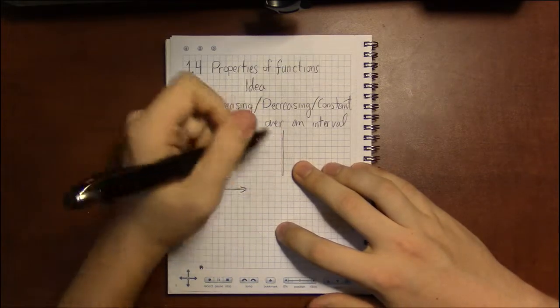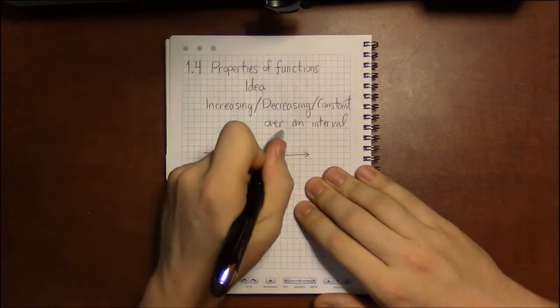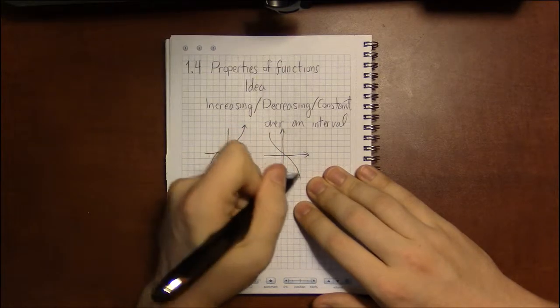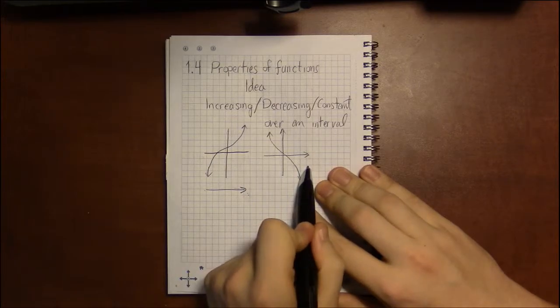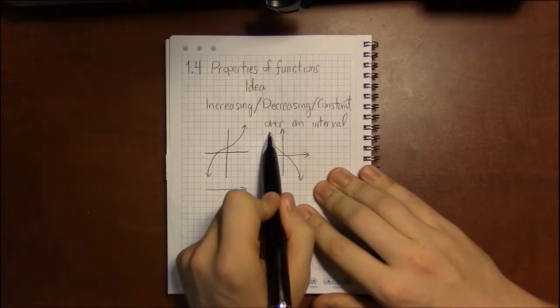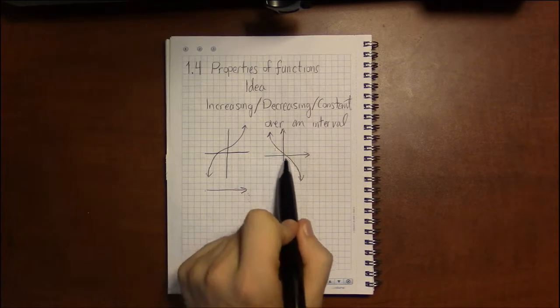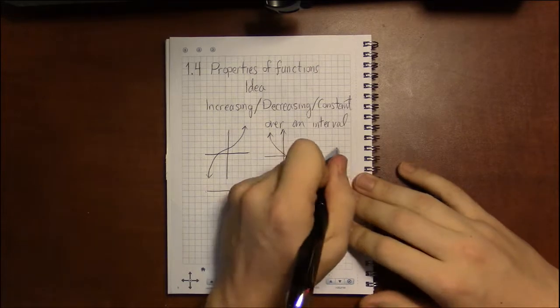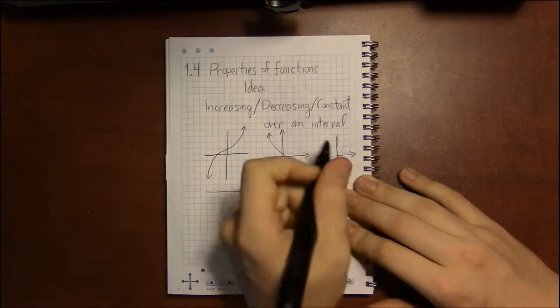So by now you could guess what decreasing means: that as you move left to right on the X-axis, on the Y-axis you're moving from top to bottom as you go left to right.